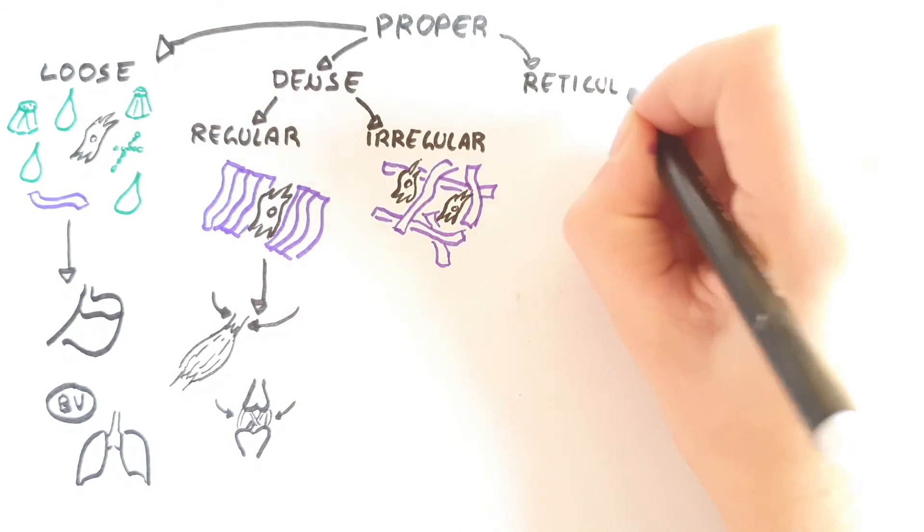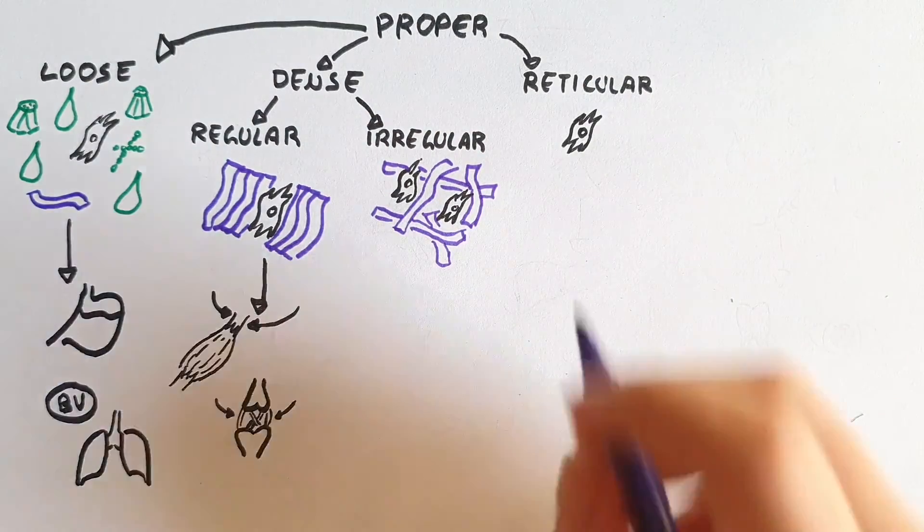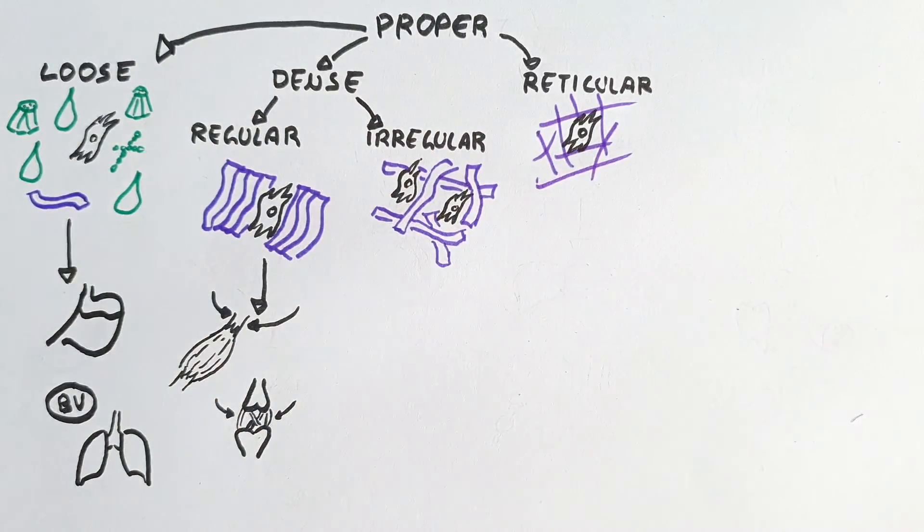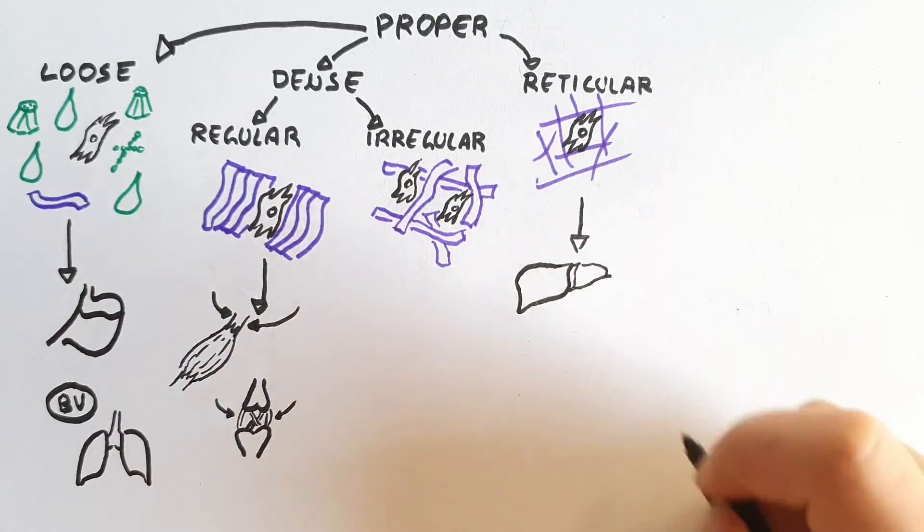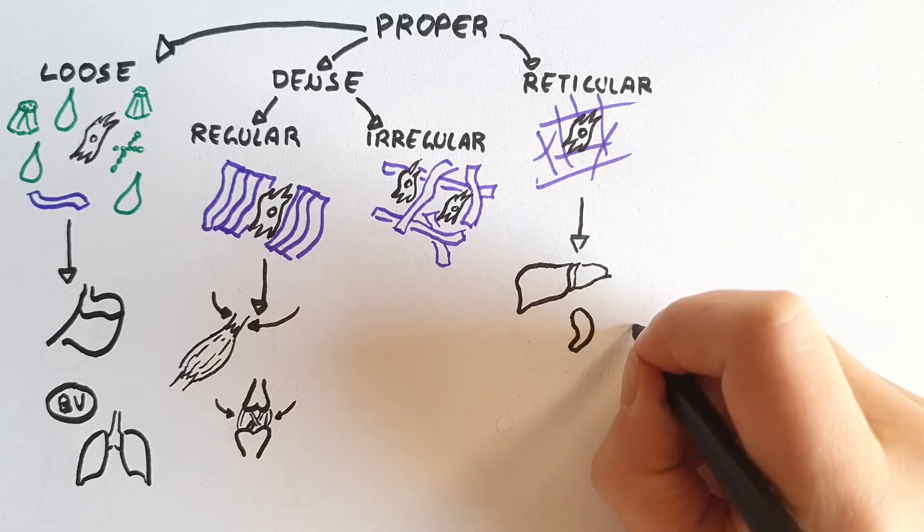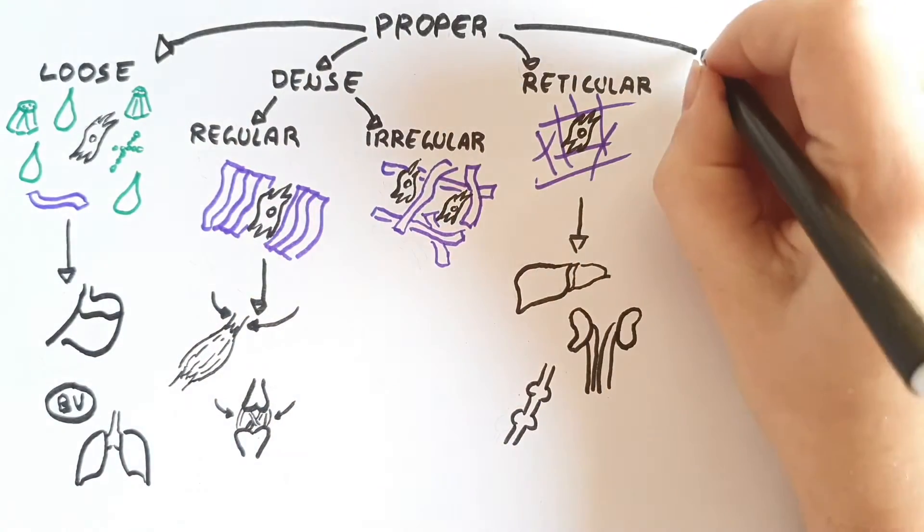Another proper connective tissue is the reticular connective tissue, which has a higher cellular content and has a branched and mesh-like pattern due to the arrangement of its fibers. It functions as a connecting stroma in liver, kidneys, and lymph nodes.